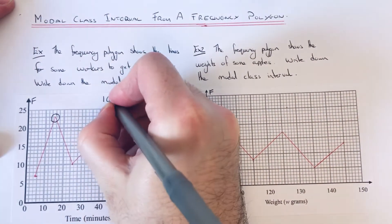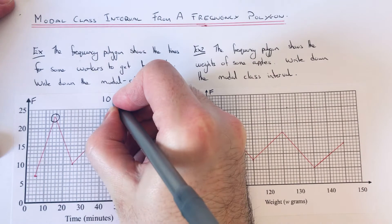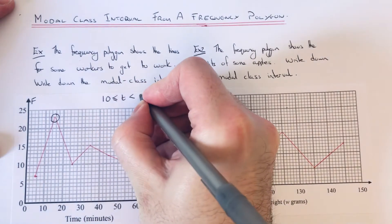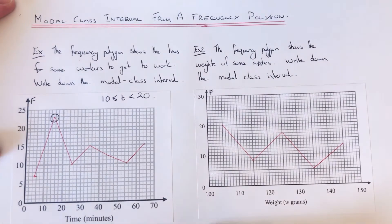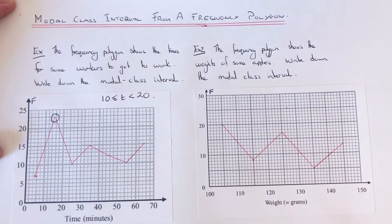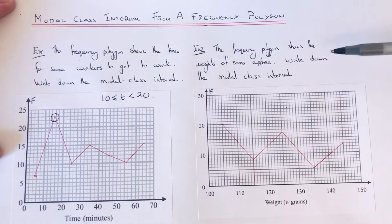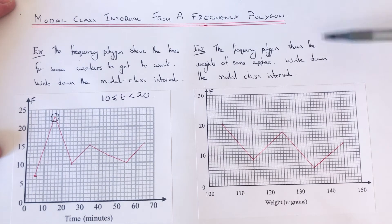Like this. Okay, so it's 10 to 20 minutes. Let's have a look at example two then. The frequency polygon shows the weights of some apples.